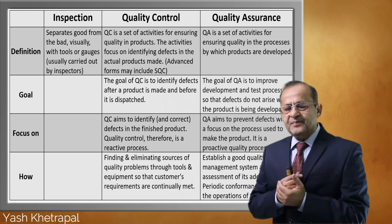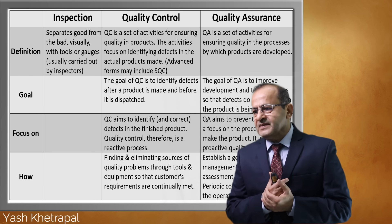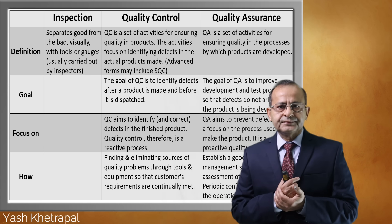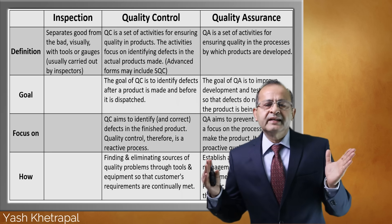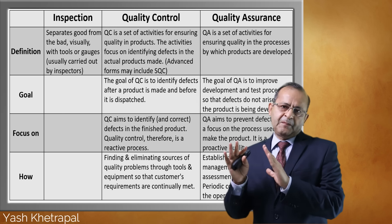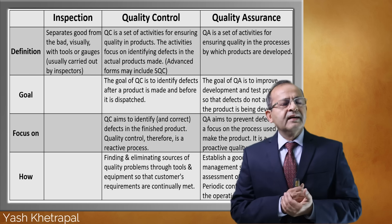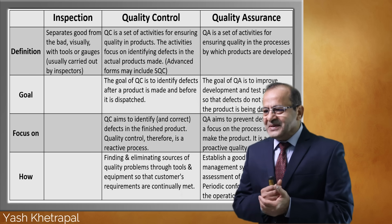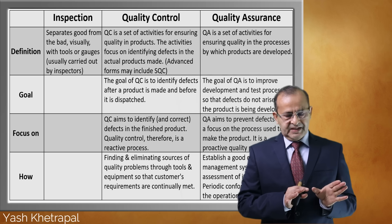What is QA? By definition, QA is a set of activities for ensuring quality in the process by which products are developed — including planning and their execution. That's quality assurance. The goal of QC is to identify defects after the product is made and before it is sent to the customer.